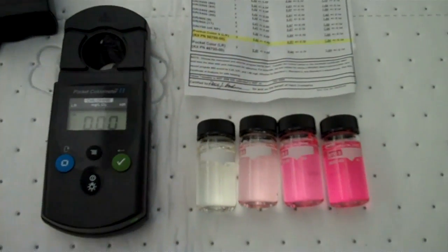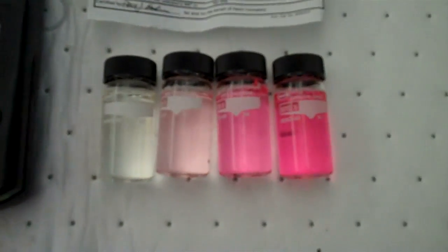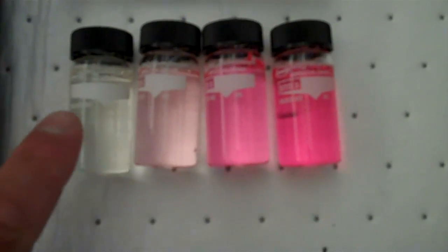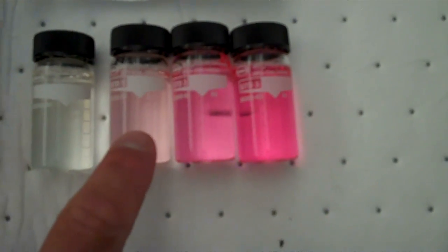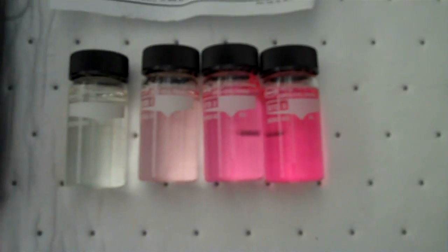Do you have any questions as to if your colorimeter is working correctly? You can use the standards that we purchased. There's the blank, and standard one, two, and three, which indicate different levels. Certificate of Analysis is here, which also correlates to the blank, standard one, standard two, and standard three, and you can come down here and look at the pocket colorimeter two, come across, and this says 0.22 plus or minus 0.09.